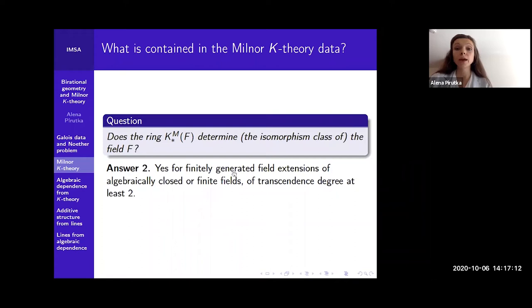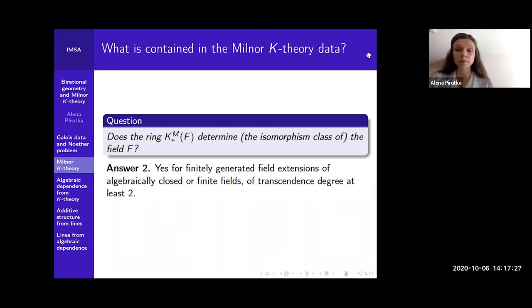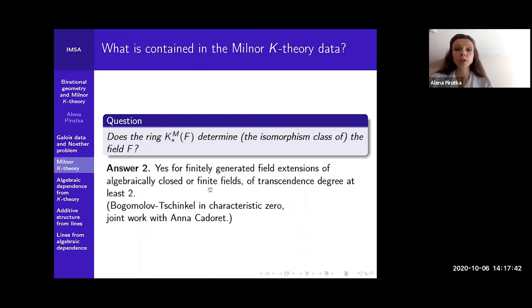We will be interested in finitely generated field extensions of algebraically closed or finite fields, to know if one can determine the field from the Milner K-ring. The answer is yes if you take a function field of an algebraically closed or finite field of transcendence degree at least two. In characteristic zero, this was proved by Bogomolov and Tschinkel. In positive characteristic, this is a joint work with Anna Kadets. I'm going to talk more about the positive characteristic case in a moment.